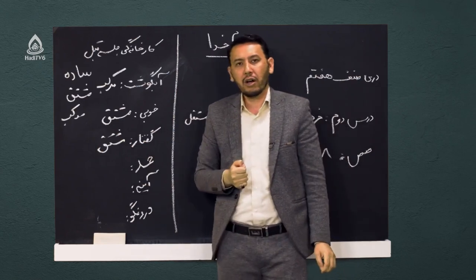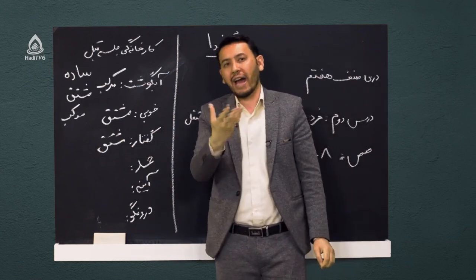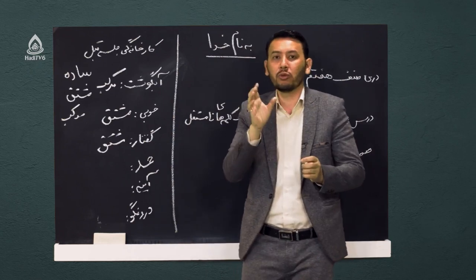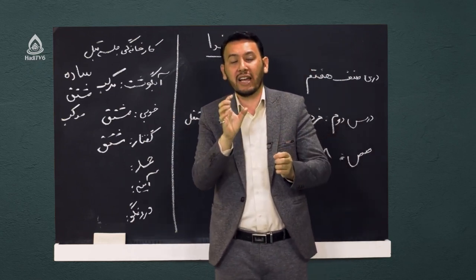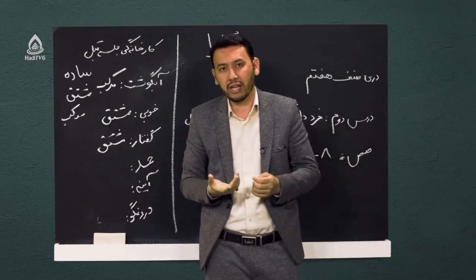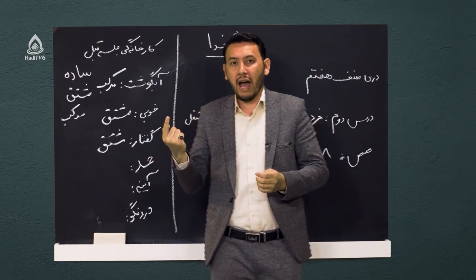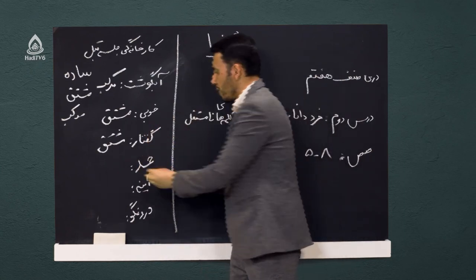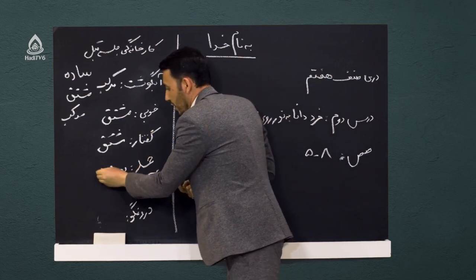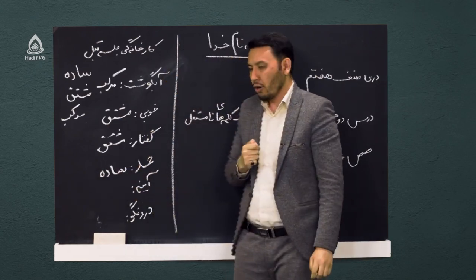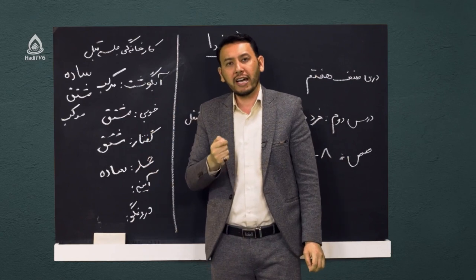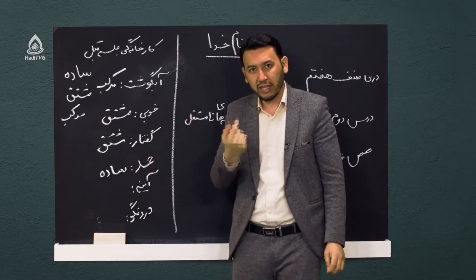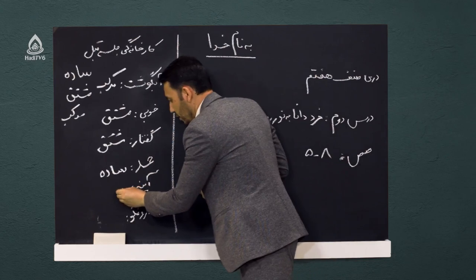کلمه هم: آیا می‌توان هم را تجزیه کرد؟ آیا قابل تجزیه به دو جزء یا چند جزء می‌تواند باشد؟ نه، هم دارای یک جزء معنادار واحد است، پس می‌شود کلمه ساده. کلمه آینه: آینه هم مانند کلمه هم دارای یک جزء مستقل است و باز هم می‌شود ساده.